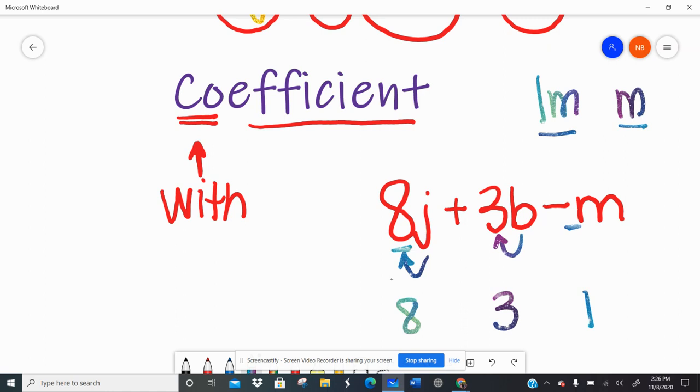The main thing to pay attention to is the sign in front of the coefficient. So there is no sign here in front of the 8, so I know that's positive, right? It's implied that it's positive. With the 3, I have that plus sign, so I know that's a positive 3. But in front of the m, I have a negative sign.